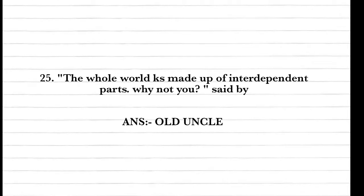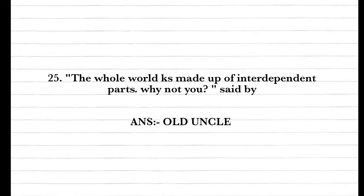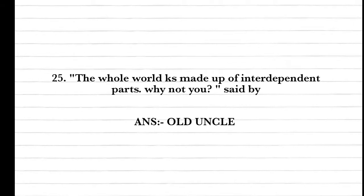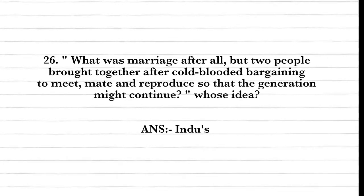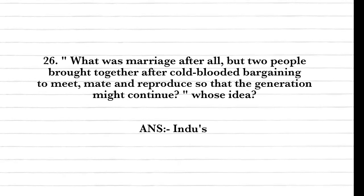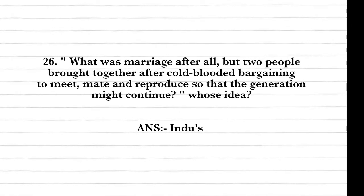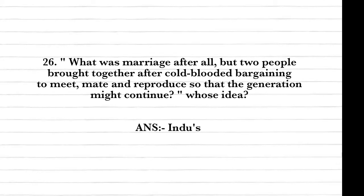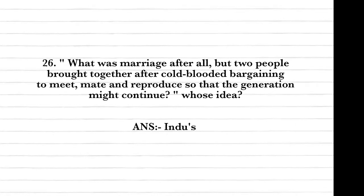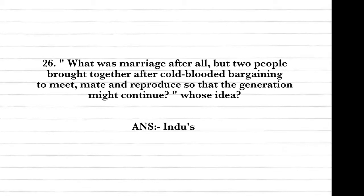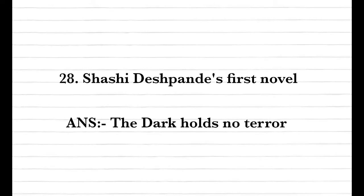Question twenty-five: 'The whole world is made up of independent parts. Why not you?' Said by the old uncle. Question twenty-six: 'What was marriage? After all, but two people brought together after cold-blooded bargaining to meet and reproduce so that the generation might continue.' Whose idea? Answer: Hindu's.